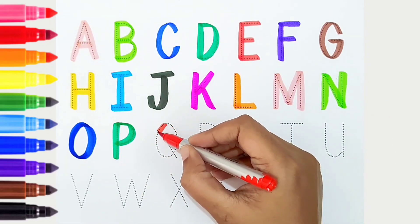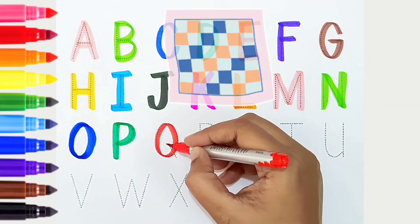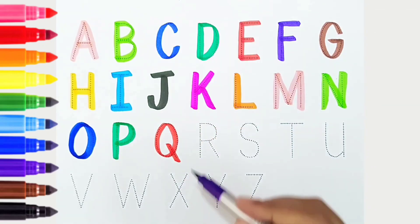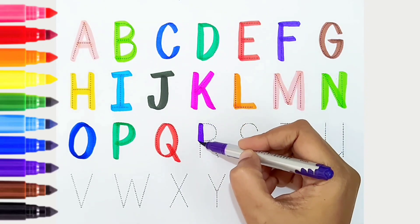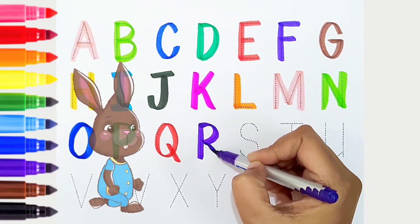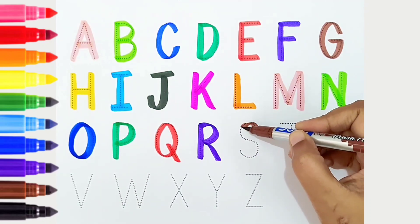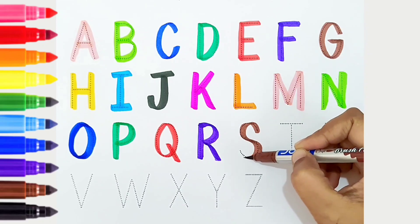Q, red color, is for quilt. R, violet color, is for rabbit. S, brown color, is for star.